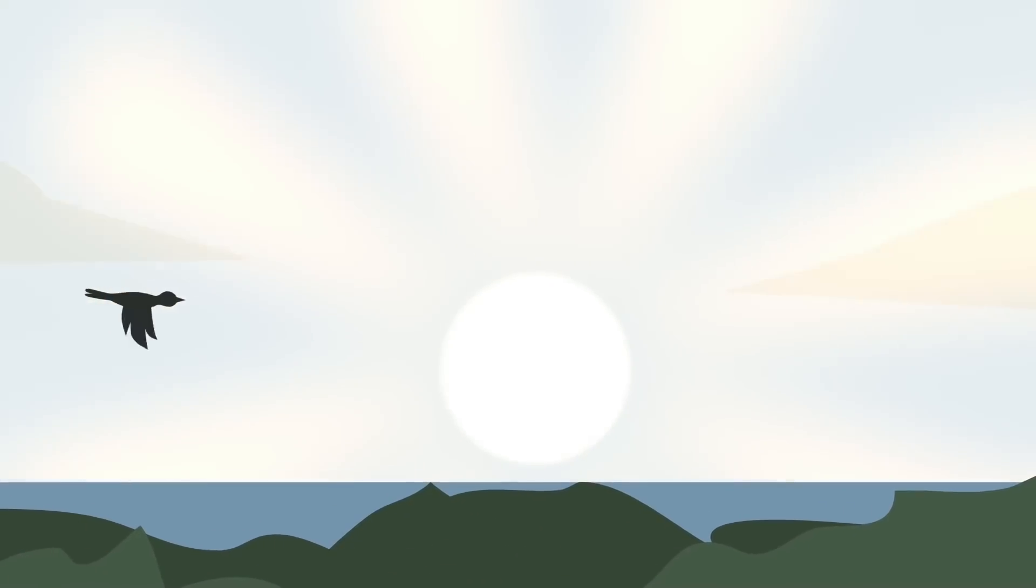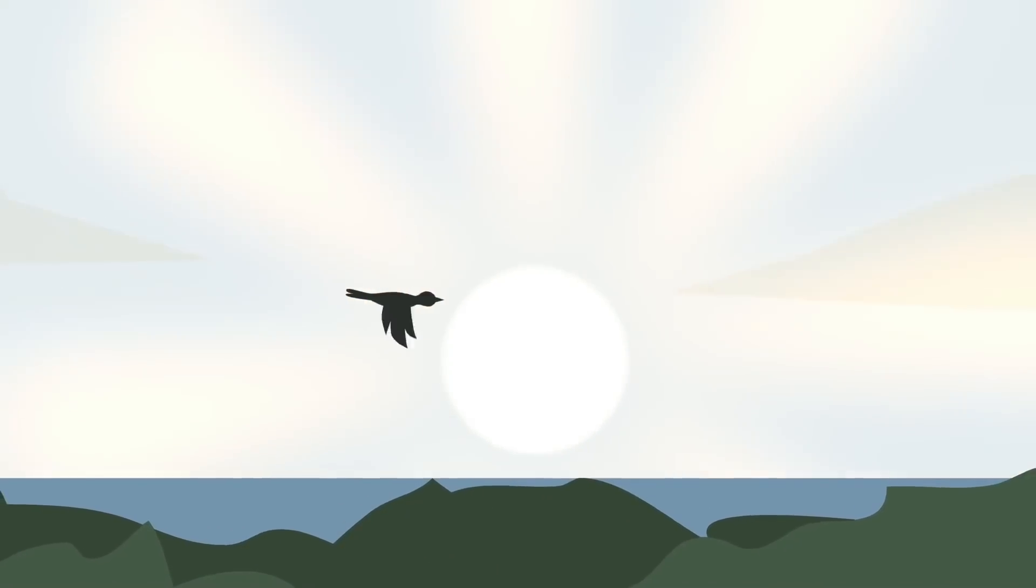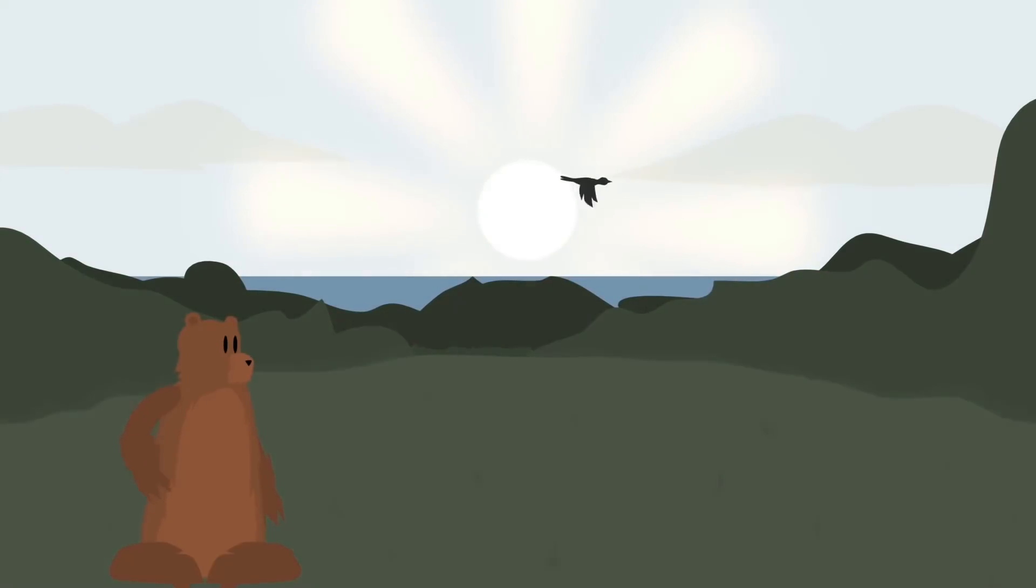Things will start to get ugly in about 600 million years, when the level of carbon dioxide in the atmosphere drops too low to support photosynthesis, causing all plant life to die off. Naturally, animal life will follow.